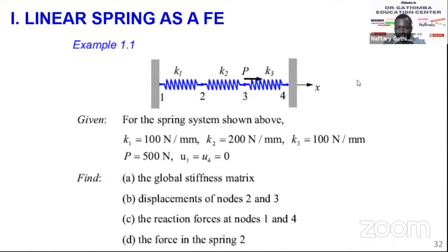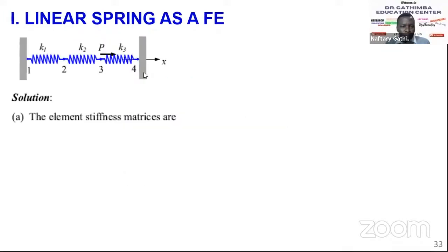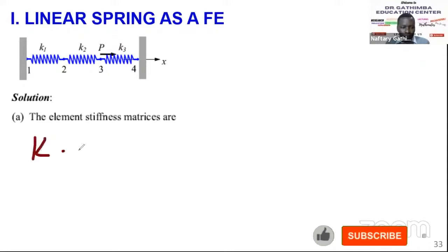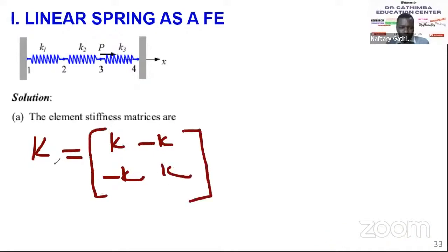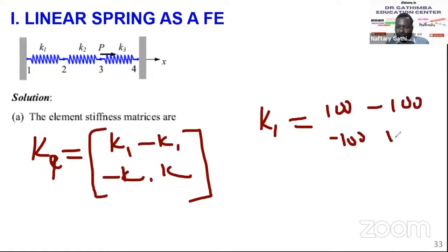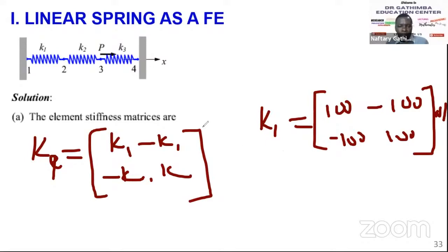Keep at your fingertips that the elemental stiffness matrix for an element is [k, -k; -k, k]. For element 1, K1 = [100, -100; -100, 100], with units of Newton per millimeter. K2 = [200, -200; -200, 200] and K3 follows the same pattern. Getting the elemental stiffness matrix is very simple.